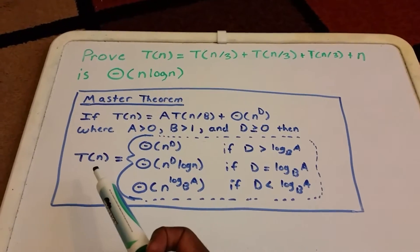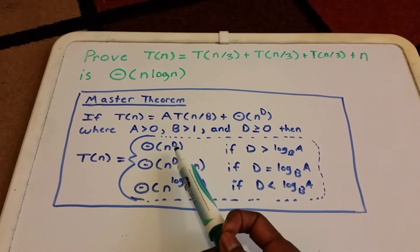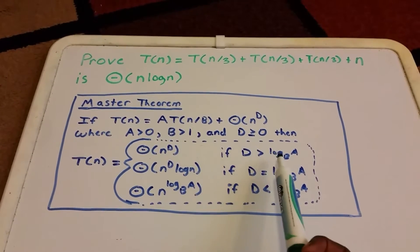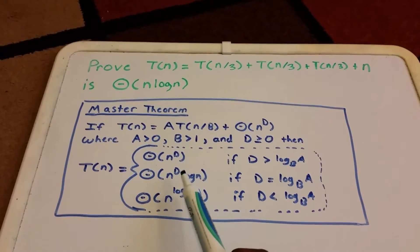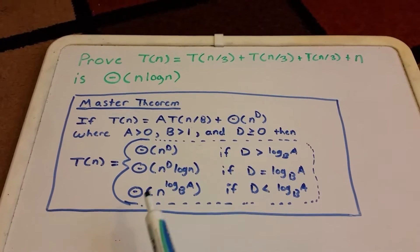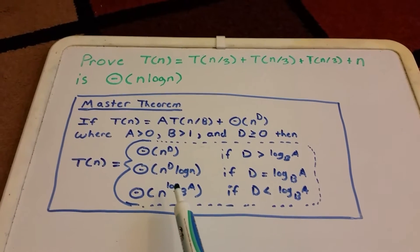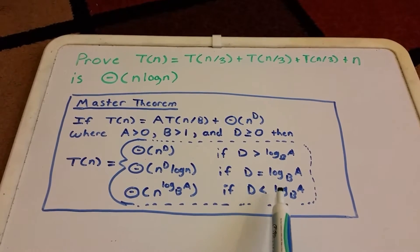Then T(n) is Θ(n^d) if d > log_b(a), Θ(n^d log n) if d = log_b(a), and Θ(n^(log_b(a))) if d < log_b(a).